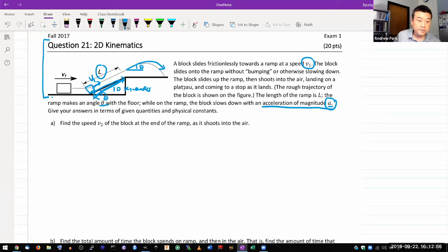So the question asks, find the speed v2 of the block at the end of the ramp as it shoots into the air. With kinematics questions, really the thing to do is, what do you need to know? And what quantities are known? Known quantities are: you are given the initial speed v1, you are given the acceleration, you are given the length or displacement. And I think that's more or less it.